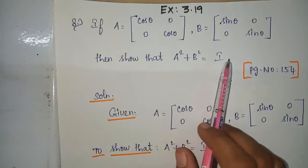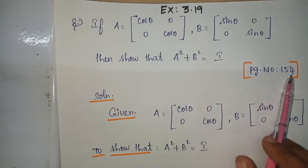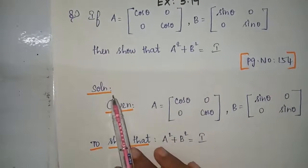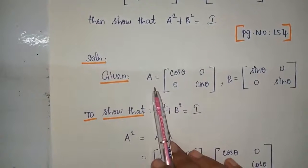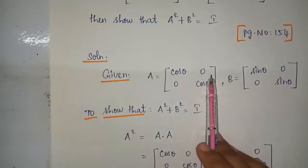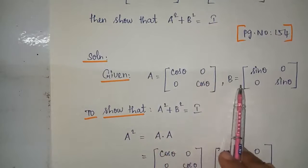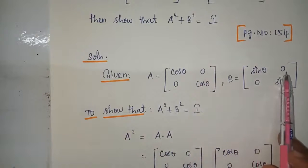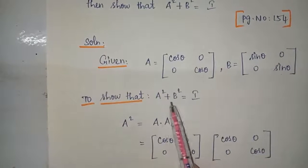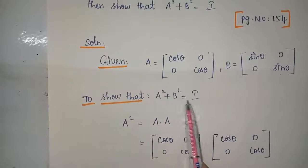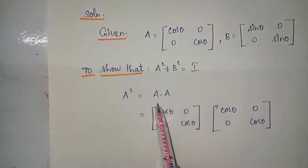Solution: given — you have to write the given matrix A equals cos theta 0 0 cos theta, comma B equals sin theta 0 0 sin theta. To show that A squared plus B squared equals I. So A squared equals A into A — you have to do the matrix multiplication.